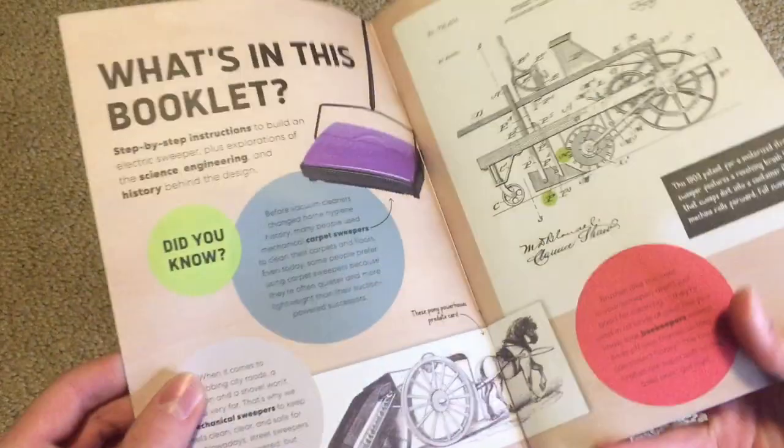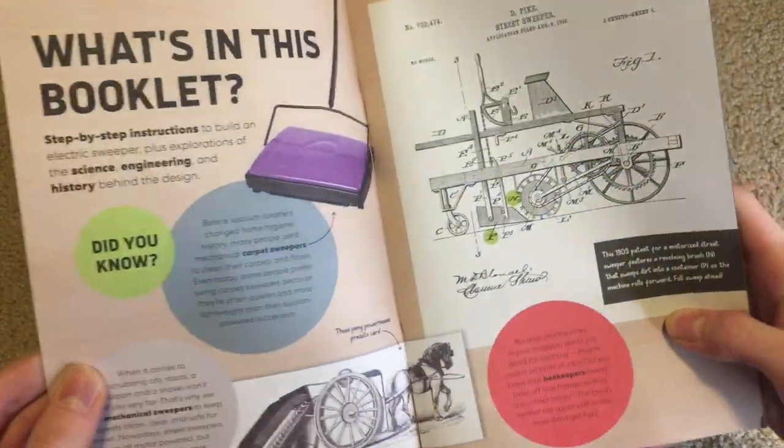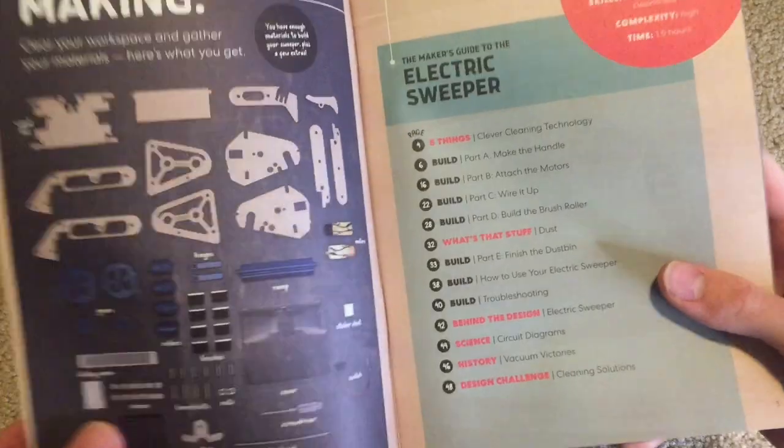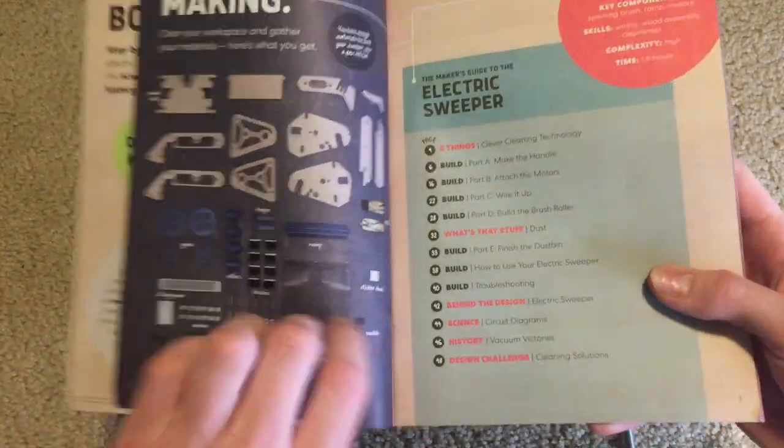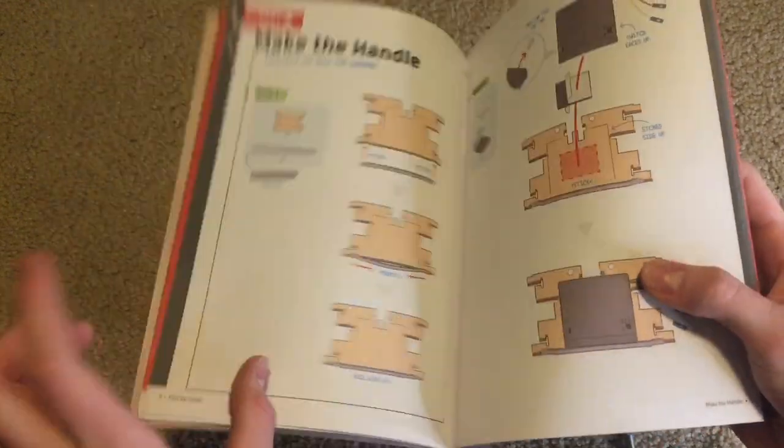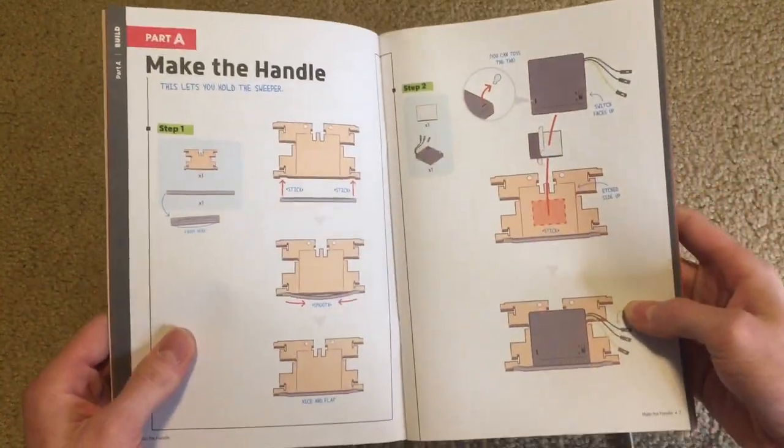Inside the booklet has all sorts of cool facts about, I guess, cleaning machines. Then a list of parts, and there's your table of contents, some more facts, and now I'm gonna start putting this together.